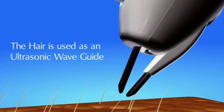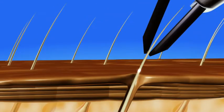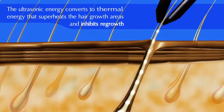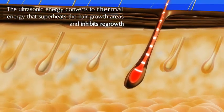Using the hair as an ultrasonic waveguide, Impressa channels sound energy down the shaft. As it travels down the shaft, this ultrasonic energy converts to thermal energy that superheats the hair growth areas and inhibits regrowth.